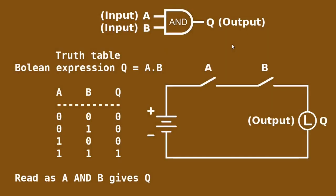But how does this work on a circuit level? Let's consider the following circuit. We've got a power supply, a lamp, and switches A and B. When both switches are open, the light does not appear because we have an open circuit. If we turn on only switch B, the lamp doesn't light up either. And if we only turn on switch A, the light still doesn't light up.